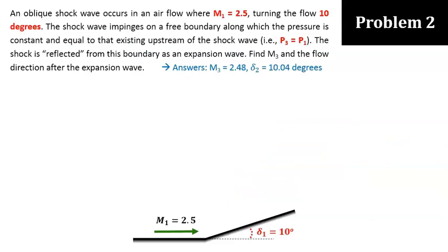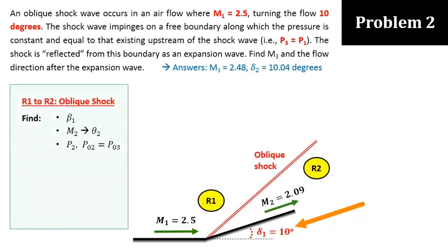In the second problem, we have a flow of M1 equals to 2.5 that is deflected inward with a delta of 10 degrees through an oblique shock. The pressure compresses into a higher pressure P2, and going across the shock, M1 will decelerate into M2, which is equal to 2.09.